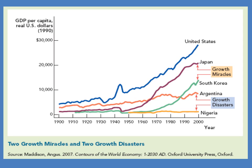We also see that there are growth disasters — there's nothing automatic about growth. In terms of GDP per capita, Nigeria has not grown in 50 years, with some ups and downs often due to the price of oil, but basically no growth at all. We also see Argentina. Argentina used to be, in the 19th century, one of the richest countries in the world, close to that of the United States. And yet it has failed to grow, even declining in its growth rate, so that today Argentina is poorer than South Korea and poorer than Japan, even though for much of its history Argentina was richer. It is possible, if you don't install the right policies, for a country to fail to grow.